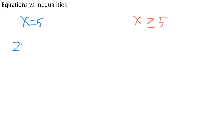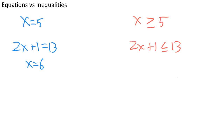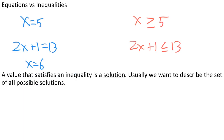Similarly, we can look at the equation 2x plus 1 equals 13 and compare it to the inequality 2x plus 1 is less than or equal to 13. We know how to solve this equation — x equals 6 is the solution. But what does it mean to solve an inequality like this, and what does the solution look like? Just like with an equation, a solution to an inequality is a value that produces a true statement when plugged in. The difference is that where an equation might have one or a handful of solutions, an inequality will often have many solutions — even an infinite number — and we usually want to find all of them.